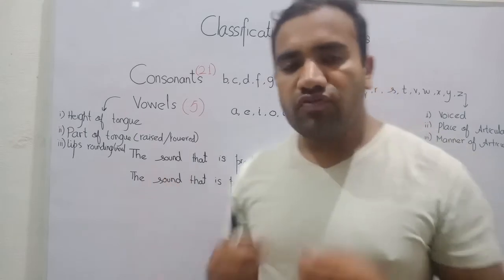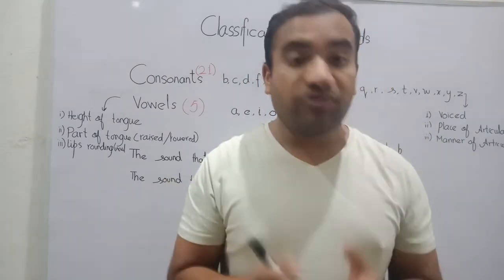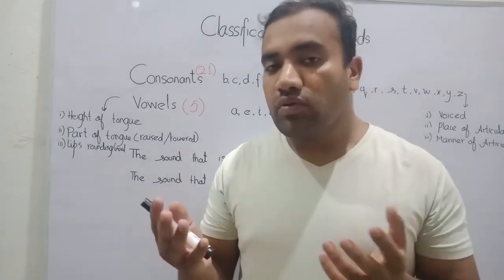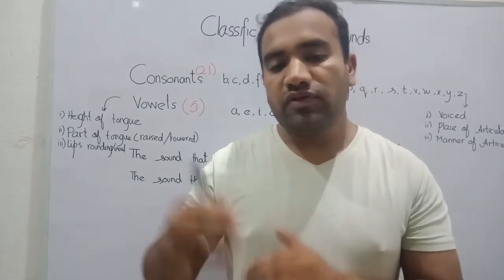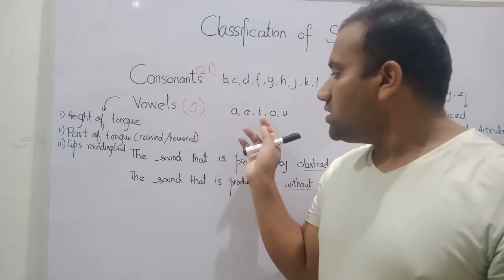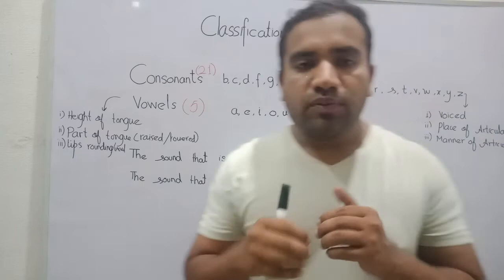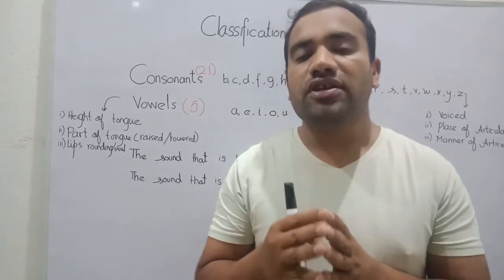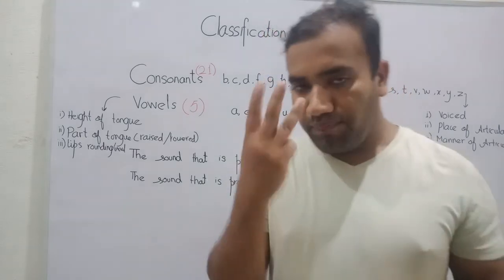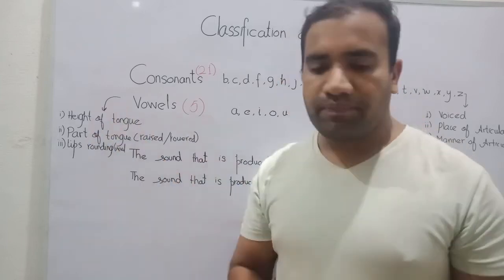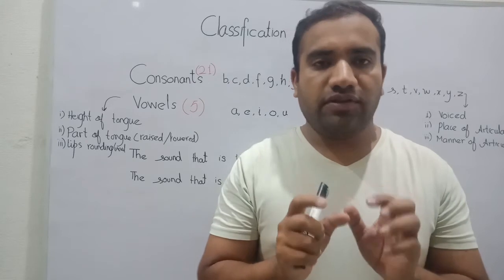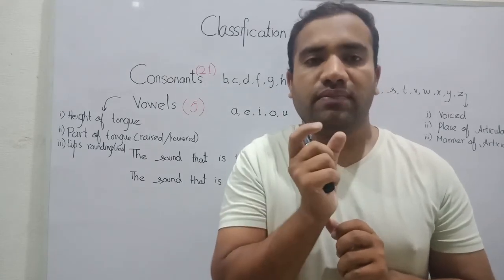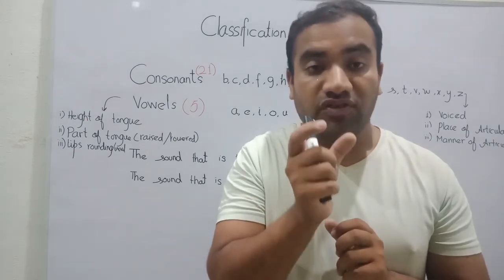Now let's move to the vowel sounds. As we claimed, vowels are produced without any obstruction, at a level of approximation. To differentiate one vowel from another, we consider three things. First is the height of the tongue — this is very important when producing a vowel sound: how high or low the tongue is raised.